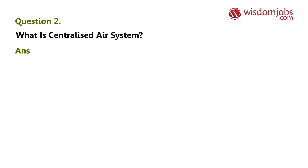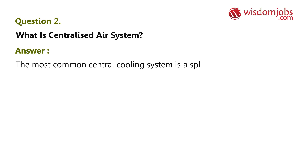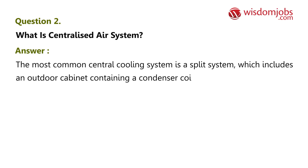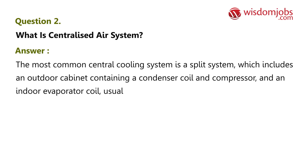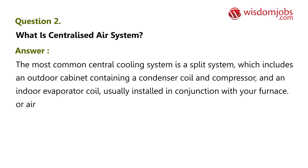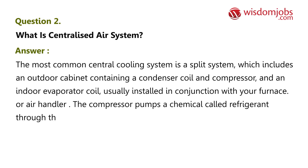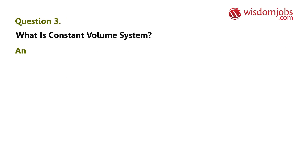Question 2: What is a centralized air system? Answer: The most common central cooling system is a split system, which includes an outdoor cabinet containing a condenser coil and compressor, and an indoor evaporator coil usually installed in conjunction with your furnace or air handler. The compressor pumps a chemical called refrigerant through the system.